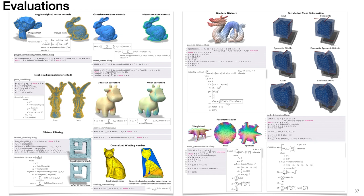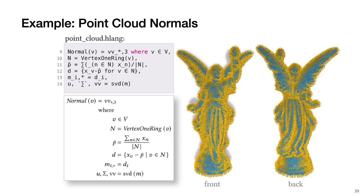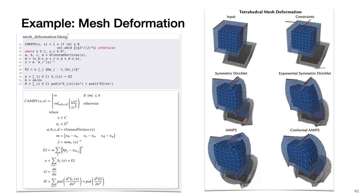To evaluate Ahad Mesh, we implemented a variety of geometry processing techniques across different representations and verified the correctness of the generated code by comparing the output to reference implementations. The examples cover different mesh types and various neighborhoods. This includes point cloud normals, discrete curvature for triangle meshes, and a variety of energies to demonstrate tetrahedral mesh neighborhoods and automatic differentiation.